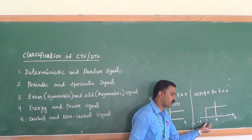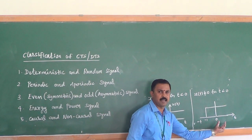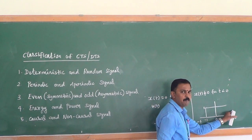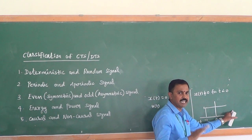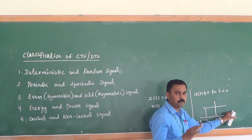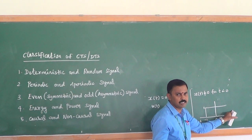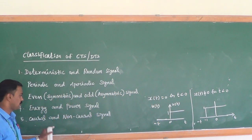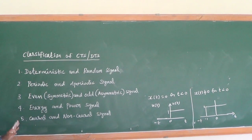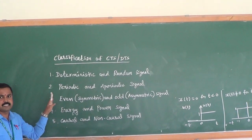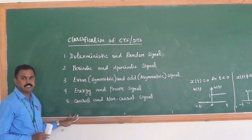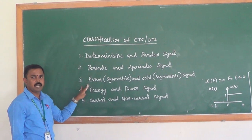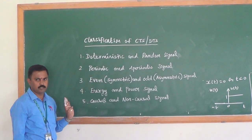For a non-causal signal example: from −t to +t, the amplitude is 1 on both negative and positive sides, so amplitude is represented on both sides of the time axis — hence it is a non-causal signal. To recap, the five classifications of continuous and discrete signals are: deterministic and random, periodic and aperiodic, even and odd, energy and power, and causal and non-causal.